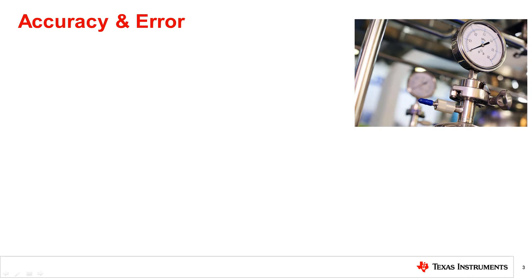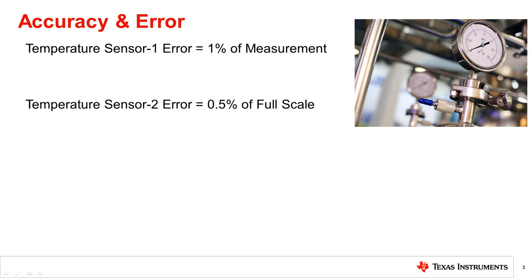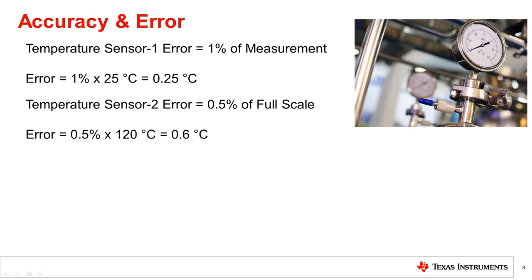As an example, let's take two temperature sensors which have a temperature span of 0°C to 120°C. One temperature sensor is specified with an error of 1% of the measurement at 25°C, while another is specified with an error of 0.5% of the full scale. When converted to absolute error value, 1% of the measurement gives an error of 0.25°C, while 0.5% of the full scale makes the error 0.6°C. Clearly, a lower value in percentage may not be a lower value in absolute terms.